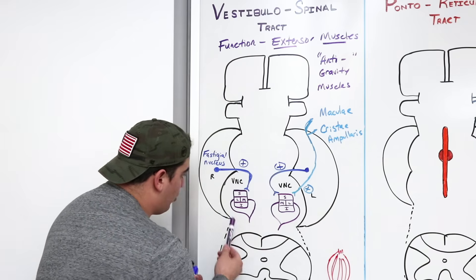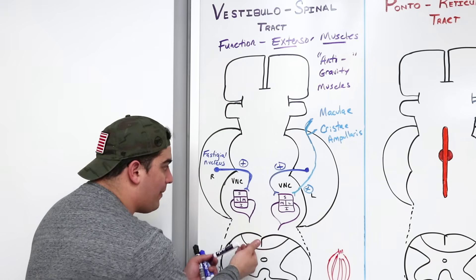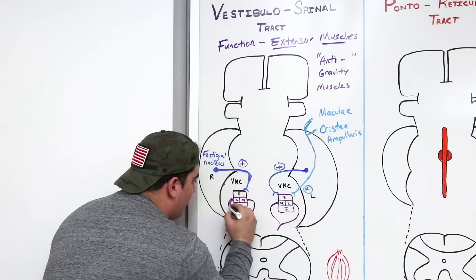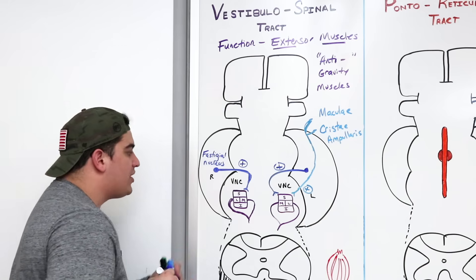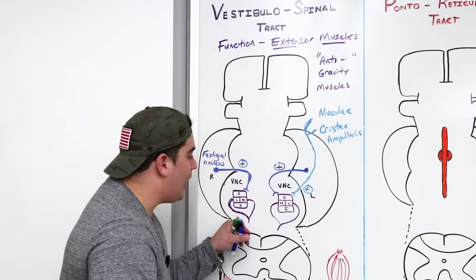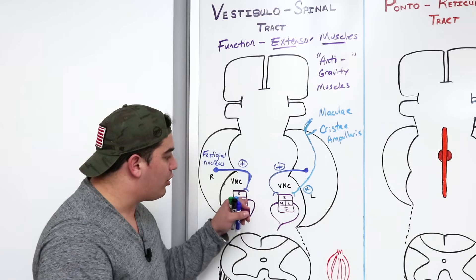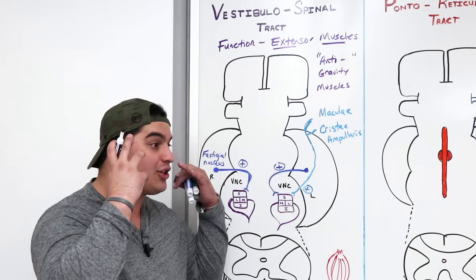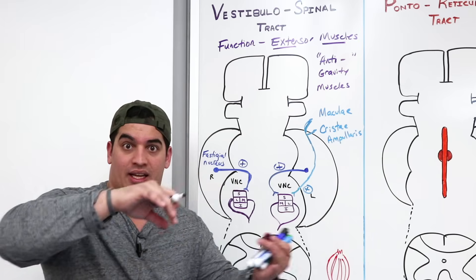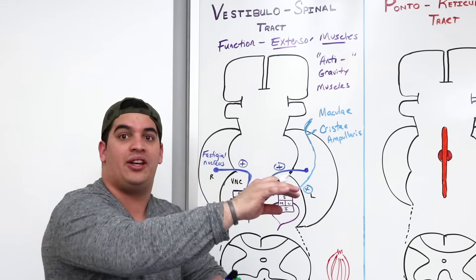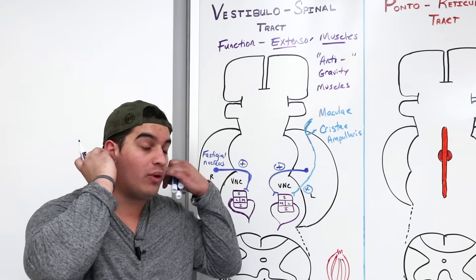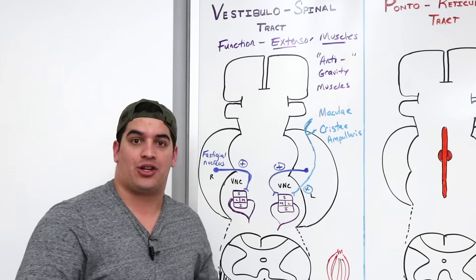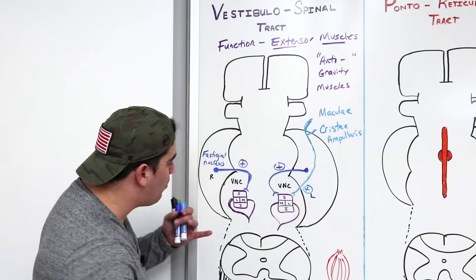Once they receive their stimulus, the lateral and medial vestibular nuclei are primarily forming the vestibulospinal tract, with most fibers coming from the lateral. The medial vestibulospinal tract controls head and neck musculature — maintaining muscle tone in the head and neck when rotating or linearly accelerating. The lateral vestibulospinal tract controls axial and appendicular extensors — limb and trunk extension.